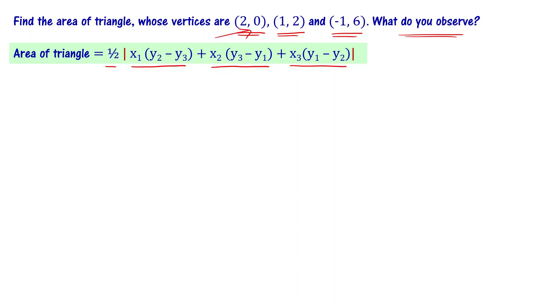Let us consider this as (x1, y1). So (x1, y1) is (2,0) and (x2, y2) is (1,2) and (x3, y3) is (-1,6). Now, let us substitute these values x1, y1, x2, y2, x3, y3 into this formula.